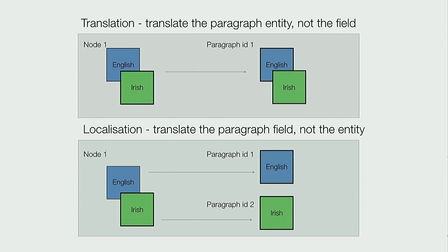It's important to get translation versus localization right at the beginning of your project, because we didn't. What happened was we decided we needed to translate the field, not the paragraph entity, and went to change our configuration on that long list. Once we did that, all our translations went poof and disappeared - they all reverted to English. We were still not in production, which was fine, but we were close to production, which was not so fine, and it had two months of content added by users. The translations were still there in the database - they just weren't accessible. We had to do a bit of database hacking to fix it.